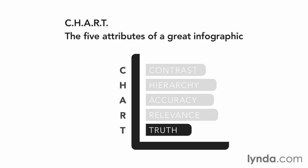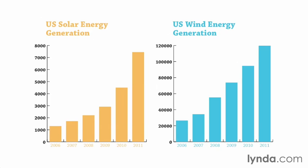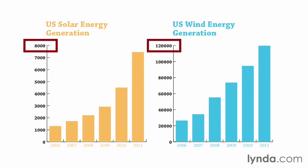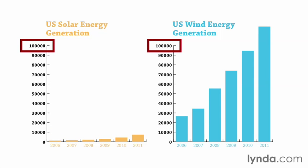The fifth and final key is Truth. Even if your data is accurate, it can be presented in a way that tells a false story. For example, putting two charts side-by-side will immediately force a viewer to compare the two. If the scale of the charts aren't even, the viewer likely won't realize that, leading to a false assumption. In these two charts, you might think that both solar and wind are similar, but they really aren't. Each chart uses a separate value scale, and technically the data in each chart is valid, but when you present them side-by-side it's easy to think they're quite similar. When both charts are used on the same scale, however, it's readily apparent that solar and wind energy aren't really that similar at all.